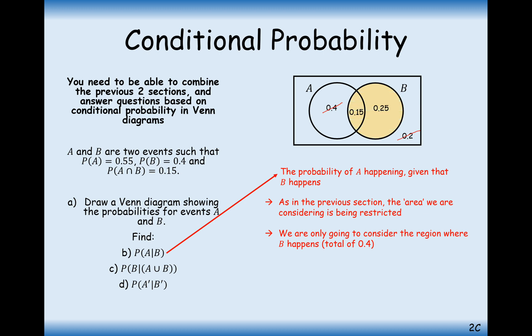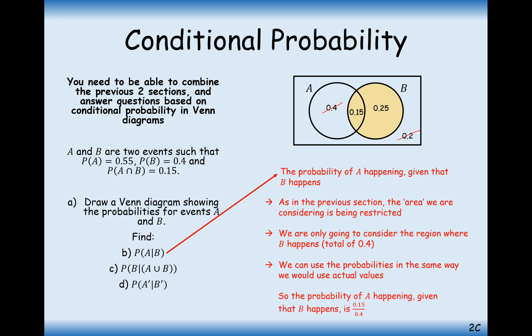It's just this section of people inside the B circle that we are interested in. So we can now calculate the probability that A is true. The part of the B circle where A also overlaps is represented by a probability of 0.15, so 0.15 goes on top of the fraction. On the bottom of the fraction is the probability of B, which is 0.4. So the probability of A given B is 0.15 divided by 0.4, which comes out to be 3/8.